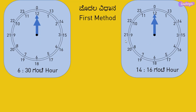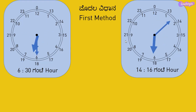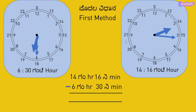Let us now see how to find the number of hours and minutes between 6:30 and 14:16. The first method to evaluate the time duration between 6:30 and 14:16 is to employ the normal subtraction method.